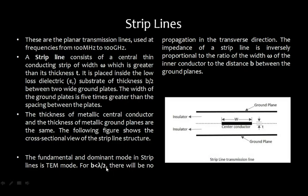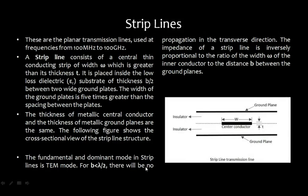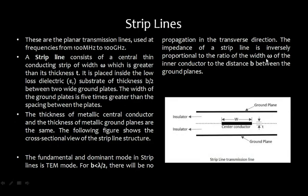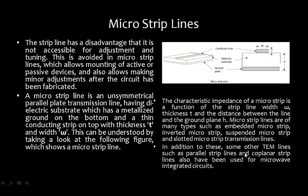For B less than lambda/2, there will be no propagation in the transverse direction. The characteristic impedance of the strip line is inversely proportional to the ratio of the width of the inner conductor to the distance B between the ground planes.